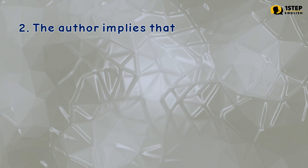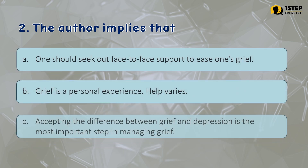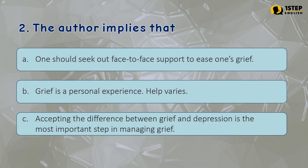Number 2: the author implies that — Letter A: one should seek out face-to-face support to ease one's grief. Letter B: grief is a personal experience and help varies. Letter C: accepting the difference between grief and depression is the most important step in managing grief. The correct answer is Letter B: grief is a personal experience and help varies.